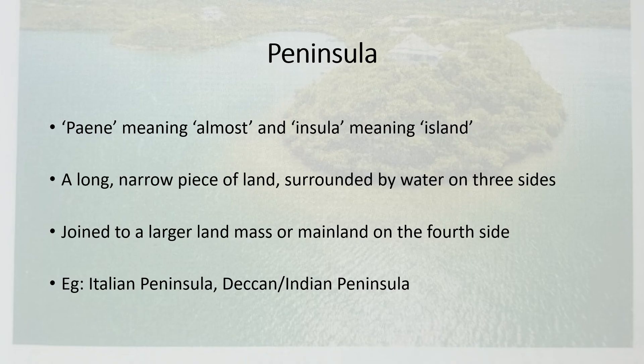A peninsula, children, is a landmass that is surrounded by water on three sides. It comes from two words: 'penne' and 'insula.' Penne means almost and insula means island. So the definition is: it is almost an island. It is a piece of land that is surrounded by water on three sides but is connected to the mainland on one side.